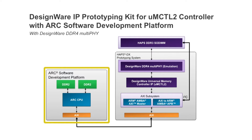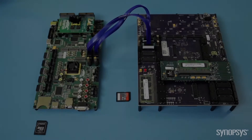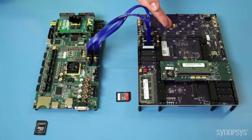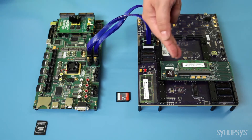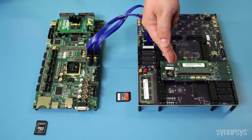This kit includes a 32-bit DesignWare ARC processor-based software development platform running Linux. Here is the HAPS CX system, ARC software development platform, and the DDR3 SODIMM data board.